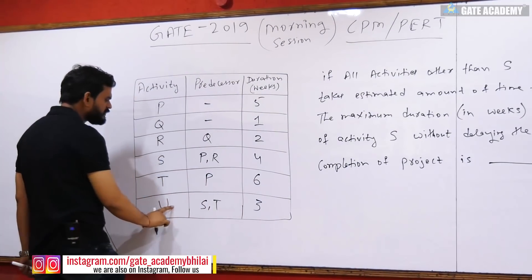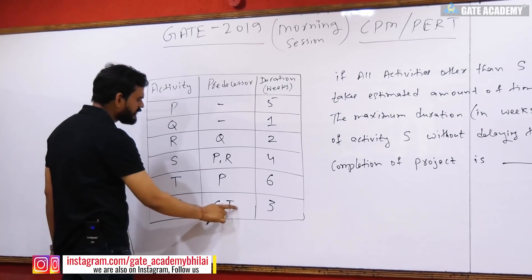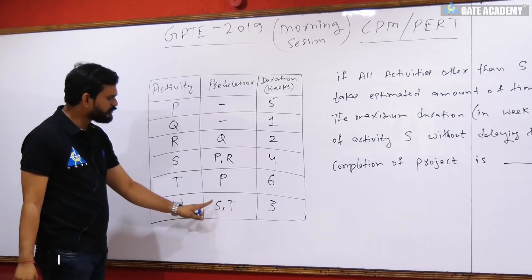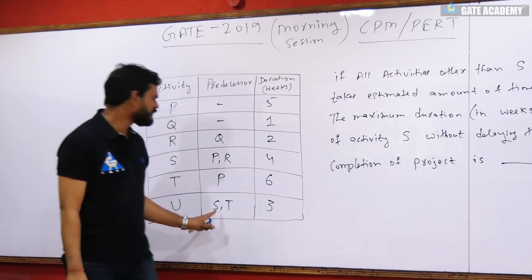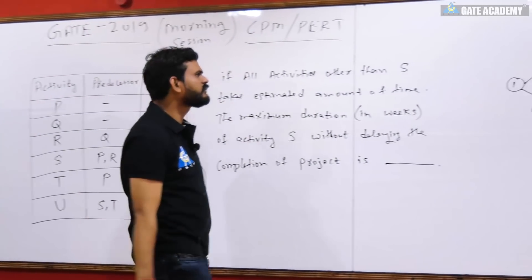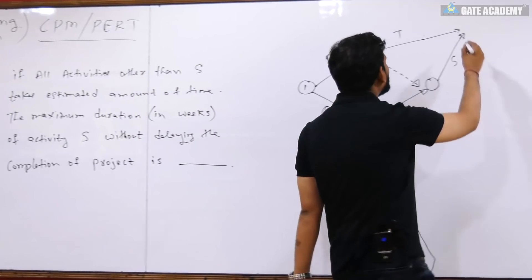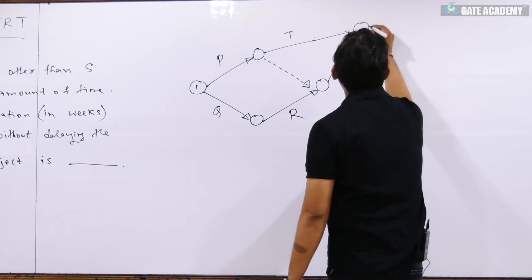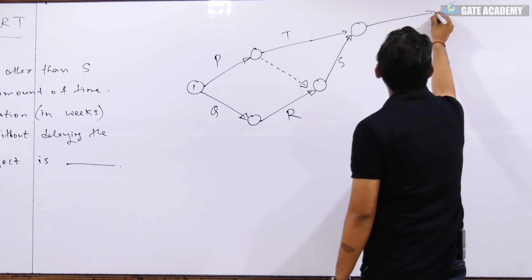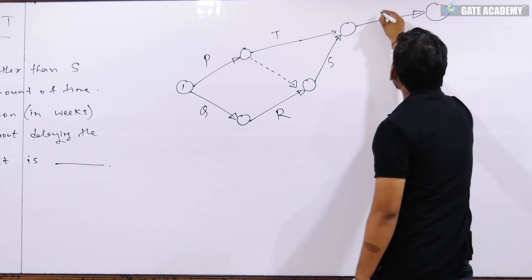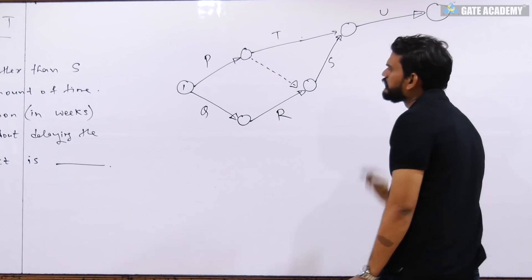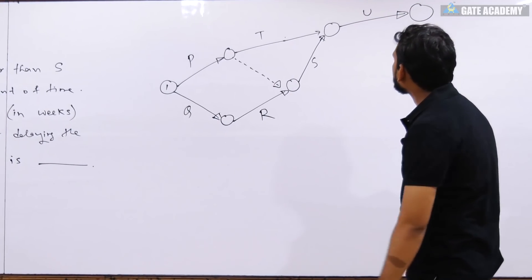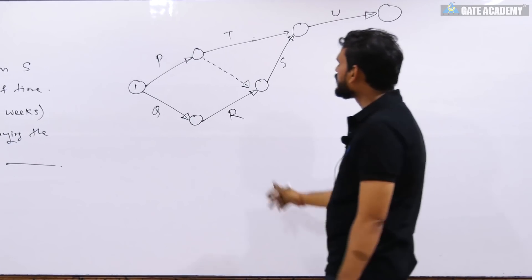U depends on S and T — meaning U will start only when both S and T are complete. So where S and T complete together, U will start from there. I have now placed all activities — P, Q, R, S, T, U — on the network, along with a dummy activity.